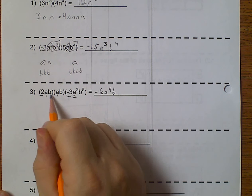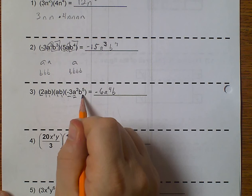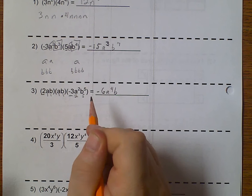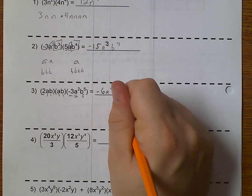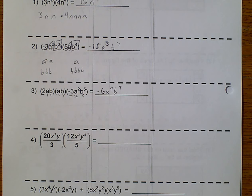So, a to the 4th. And then, I have 1, 2, 3, 4, 5, 6, 7 b's. So, it would be b to the 7th. Notice, I'm writing a little bit less each time.